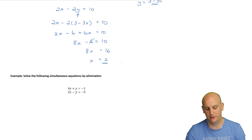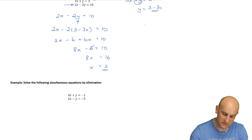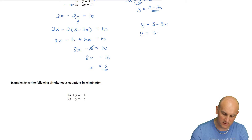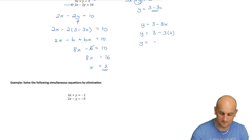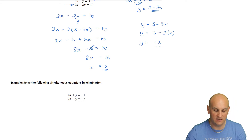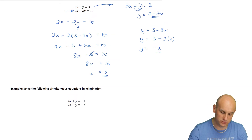At this point, thank you very much - but I'm not finished. I have to go back and find y. Using the rearranged equation y equals 3 minus 3x, and knowing x equals 2: y equals 3 minus 6, so y equals minus 3.